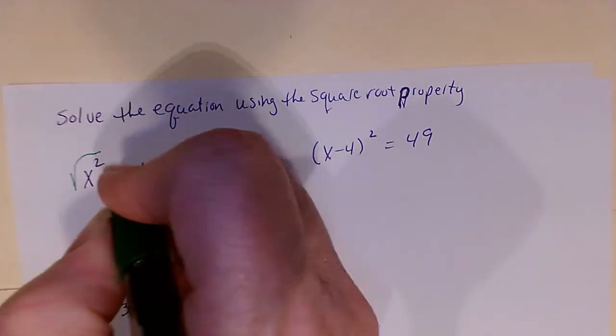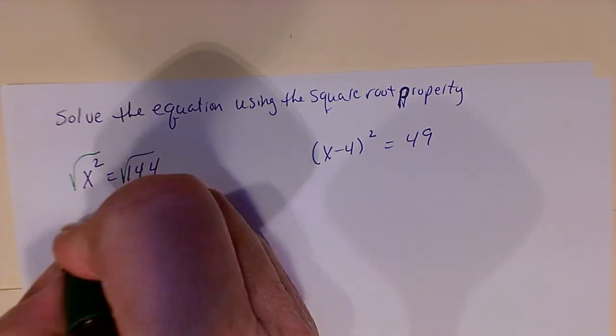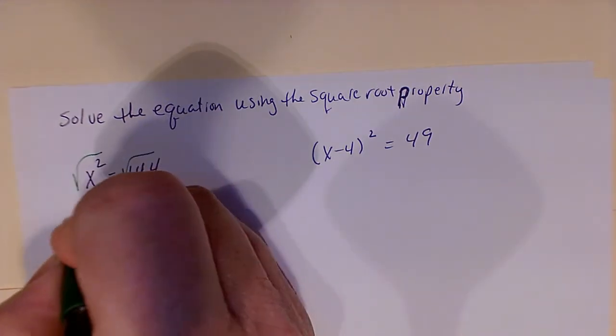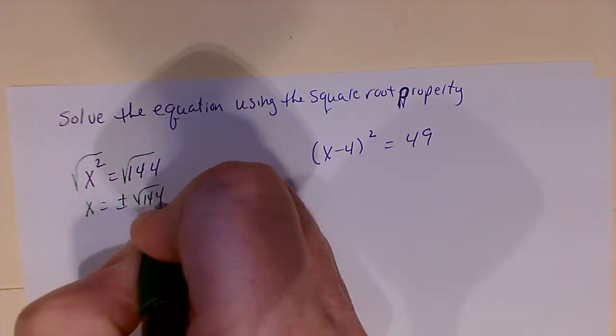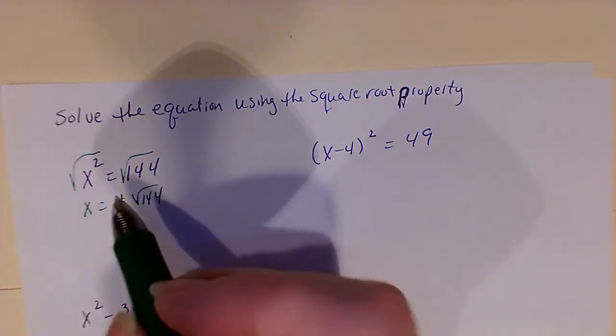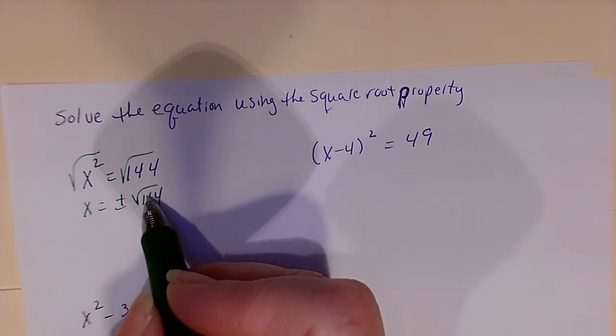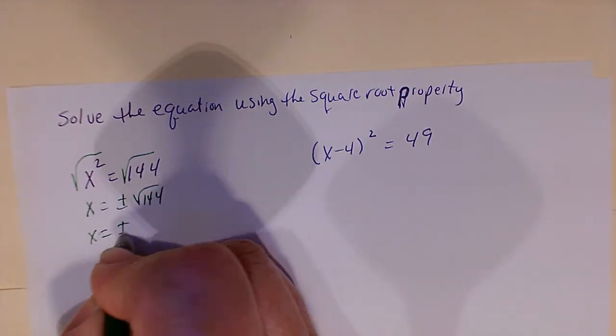Basically what we're going to do is take the square root of both sides, and then we're going to get the square root of x squared is x equals plus or minus the square root of 144. So what that means is we're going to take the square root of 144 and we're going to get 12.